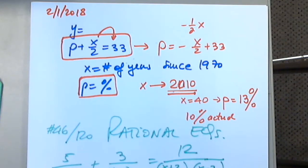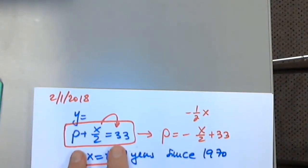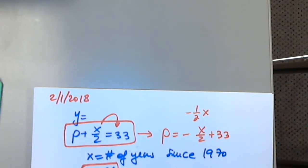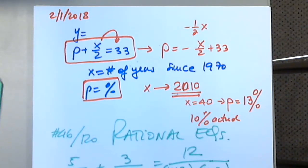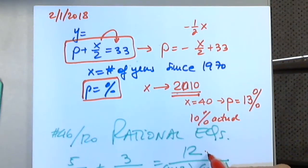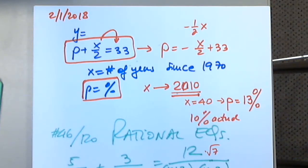How do I know that this is a rational equation? A rational equation has at least one fraction with a variable in the denominator. An equation will not be rational just because it has fractions — it needs x in the denominator. This equation is rational because x appears in the denominator.